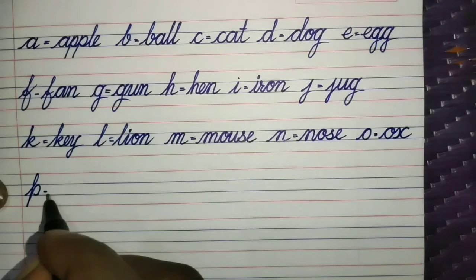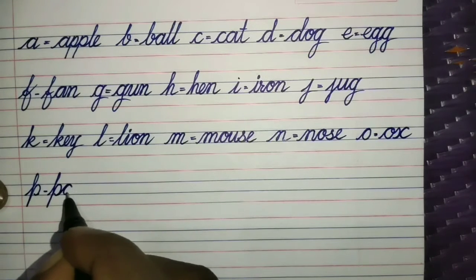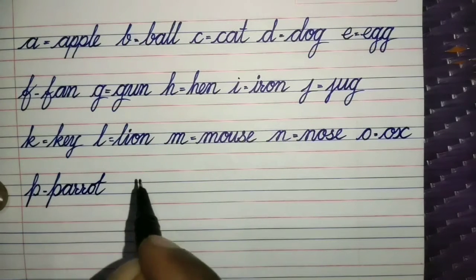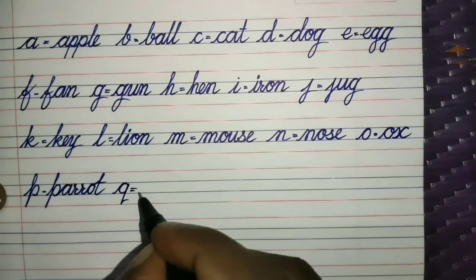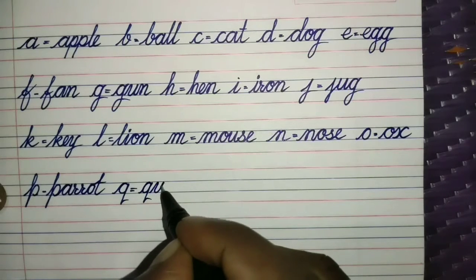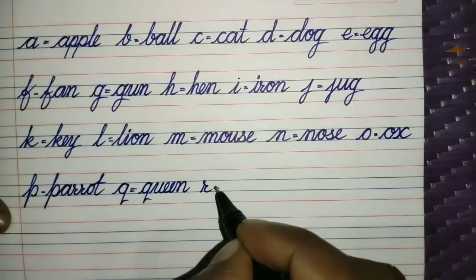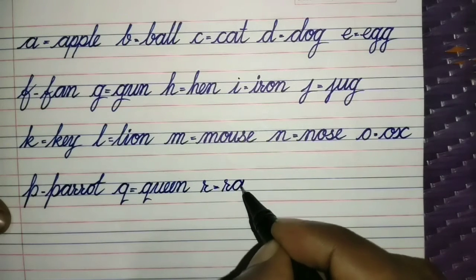P for Parrot. P, A, R, R, O, T. Parrot. Q for Queen. Q, U, E, E, N. Queen. R for Rat. R, A, T. Rat.